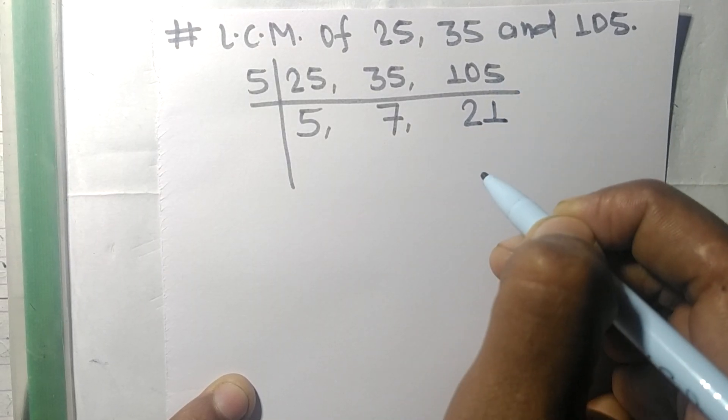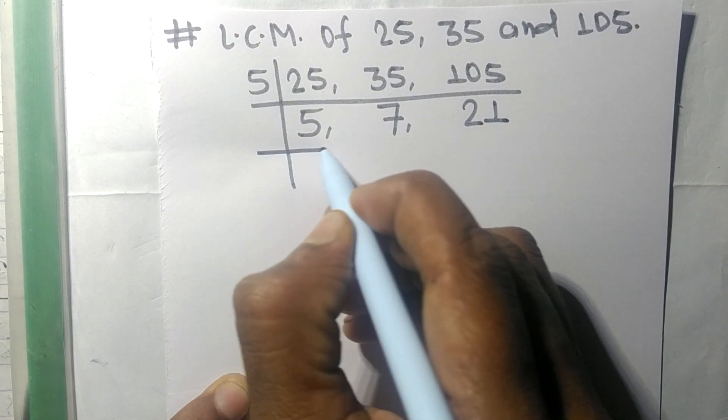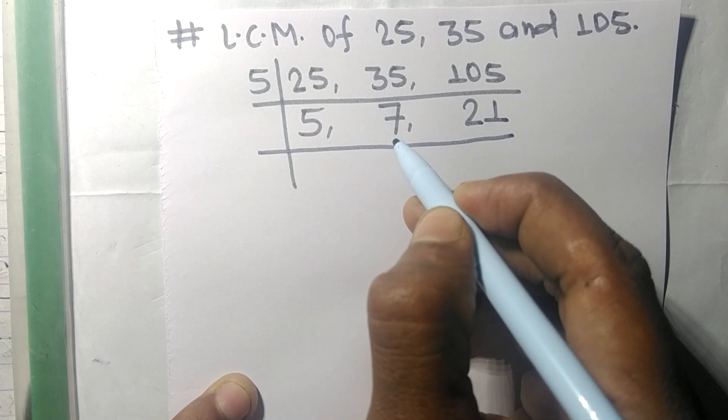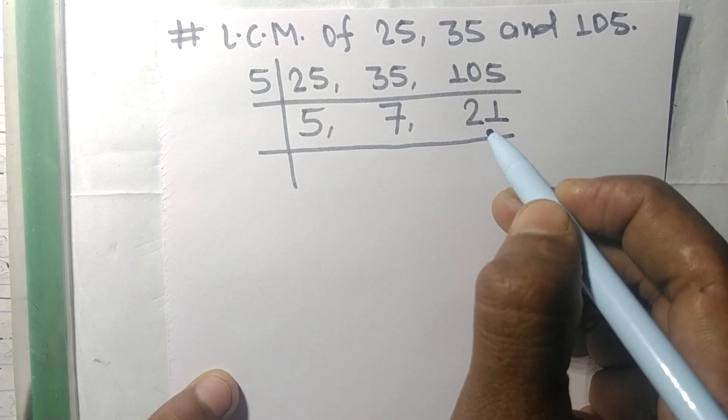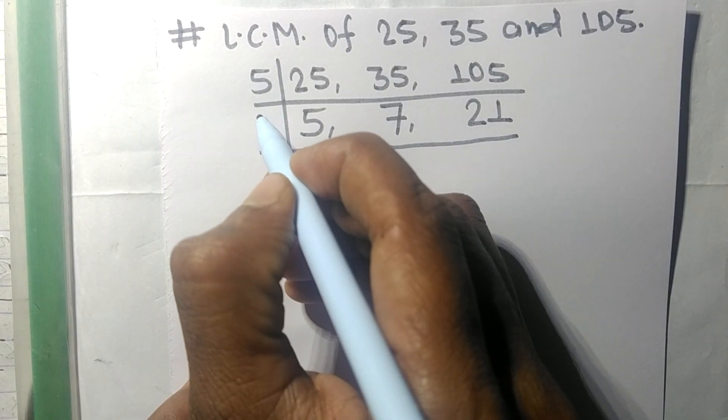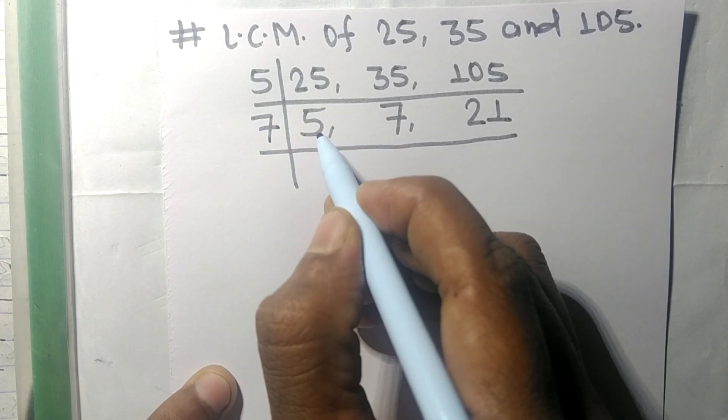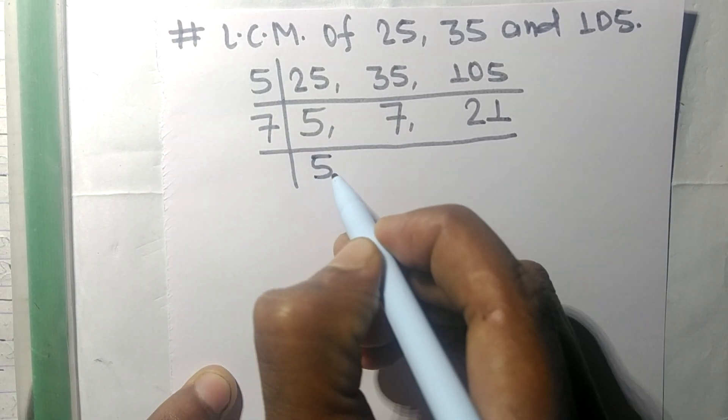5 times 1 means 5. Now, this 7 and 21 are exactly divisible by 7, so 5 is not divisible, so it is the same.